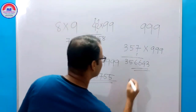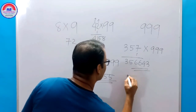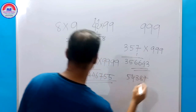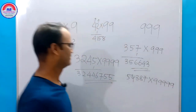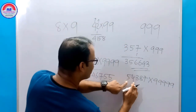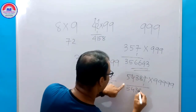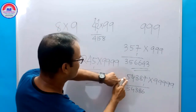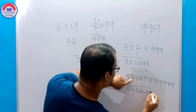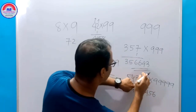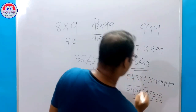Suppose 54387 into 9999. Subtract 1 to get 54386. Then subtract from 9: 9 minus 5 is 4, 9 minus 4 is 5, 9 minus 3 is 6, 9 minus 8 is 1. Then unit digit from 10: 10 minus 7 is 3. That is the answer: 543864563.